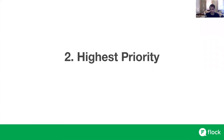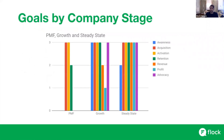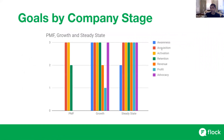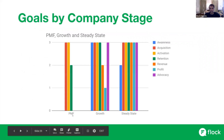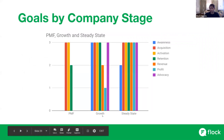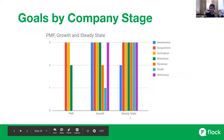Even when you look at the seven BO goals — awareness, acquisition, activation, retention, revenue, profit, and advocacy — they may not all be important to the same level in the same quarter. In different phases of the company, all goals are not equal. For instance, at an early stage of the company, revenue and profit might not be important, and awareness might not be important either — I just need to get to a product-market-fit stage, acquire some customers, and make sure I activate and retain them. When I'm in the growth phase, awareness becomes important suddenly, but profit might still not be. When I'm in a steady state, profit and revenue become important and maybe awareness is not.